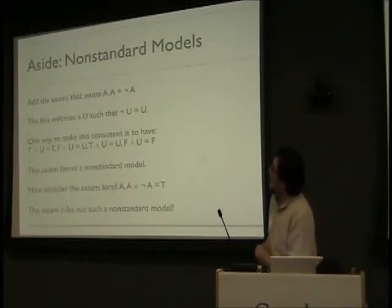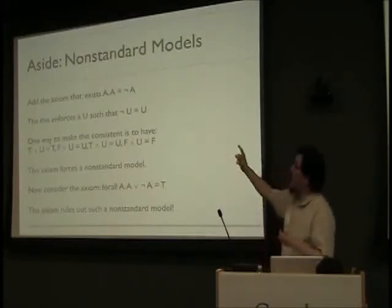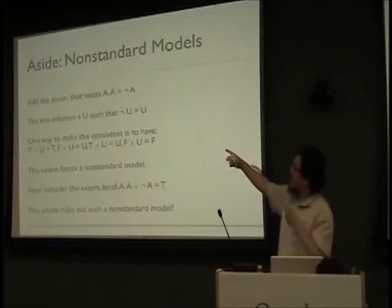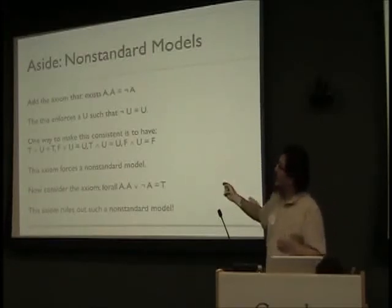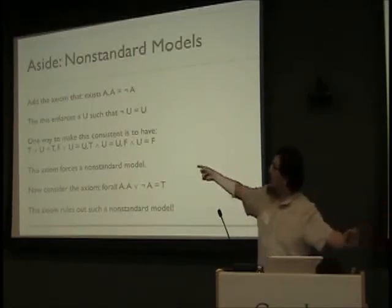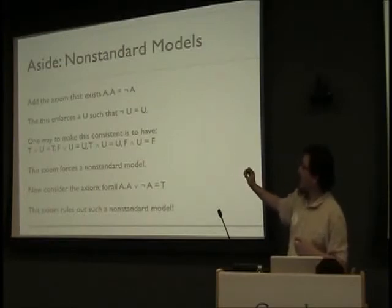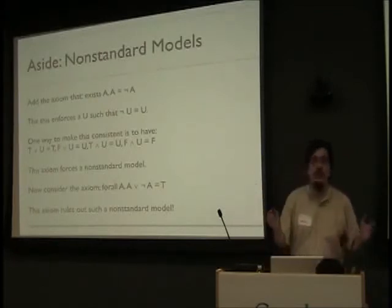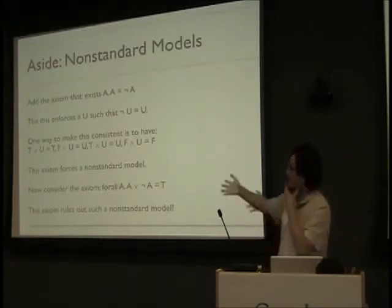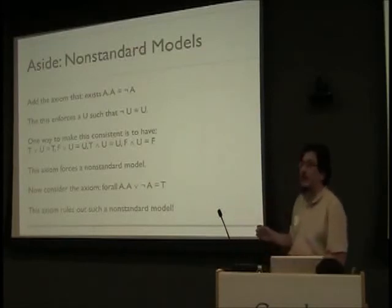Now add the axiom: there exists an A such that A equals not A. So now we actually need such an element — we need a term. And then you can say, how do we make this coincide with the axioms we've already given? One way is to add this set of formulas: true and true-or-undefined equals true; false-or-undefined equals undefined; true-and-undefined equals undefined; false-and-undefined equals false. You'll recognize this is sort of SQL's three-valued logic. U acts a lot like null in SQL. This forces a non-standard model.